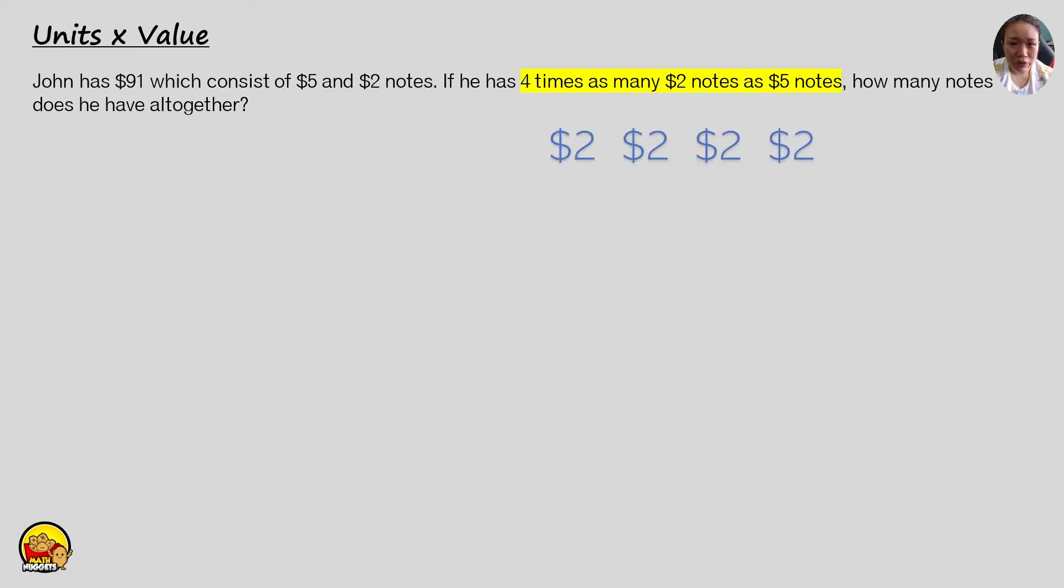There are four $2 notes and one $5 note in a set. So for every four $2 notes, there will be one $5 note.